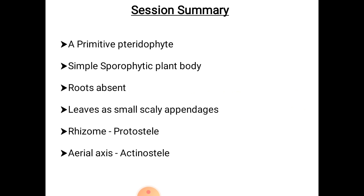Summary: Psilotum is a primitive pteridophyte with a simple sporophytic plant body. Roots are absent; the leaves are small scale appendages. The rhizome is protosteelic in condition, and the aerial axis shows actinostelic protostele.